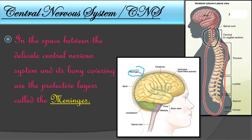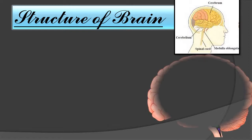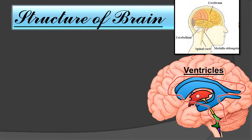The meninges are protective layers present in between the space on the bony covering of the central nervous system. The cavities present in various parts of the brain are called ventricles — you can observe the blue, red, and green colored cavities here. The long tubular cavity of the spinal cord is called the central canal.